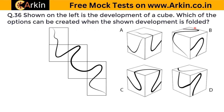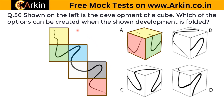Shown on the left is the development of a cube. Which of the options can be created when the shown development is folded? To make it easier, it has been color-coded. We can now clearly see: this one is this face, this one is this one, and this one is this one. Now for the yellow face, this is adjacent, this is also adjacent, and this will be opposite; this is also adjacent which will come on this side, and this is also an adjacent side which will come on this side. This is the case in option A, so A is correct. In option B, this shape is nowhere present — so it will be wrong.